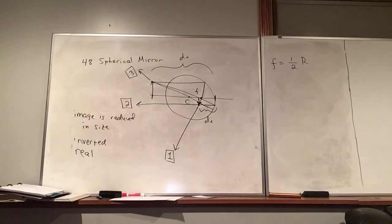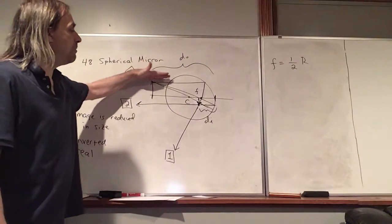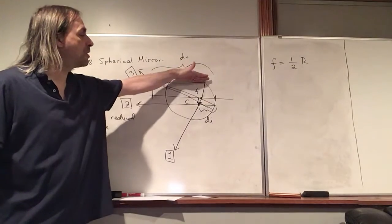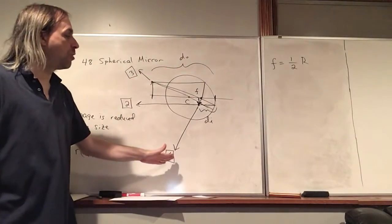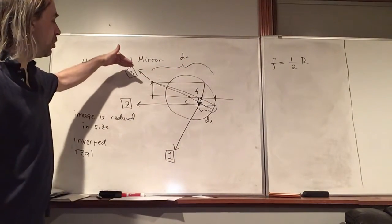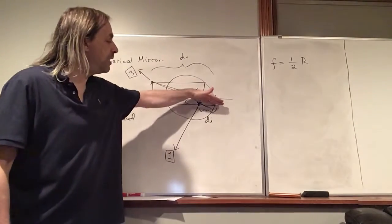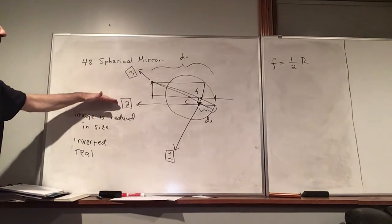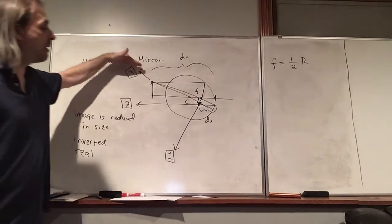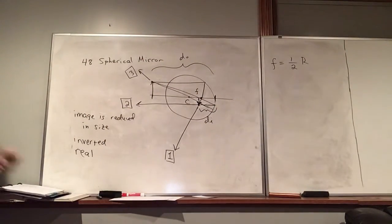So we can create this image with these three rays. Let's review the three rays: ray one, parallel to the principal axis, goes through the focal point. Ray two goes through the focal point and then bounces back parallel to the principal axis. Ray three goes through the center and bounces straight back.